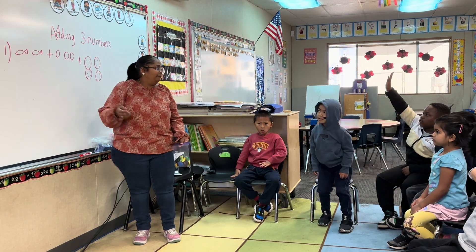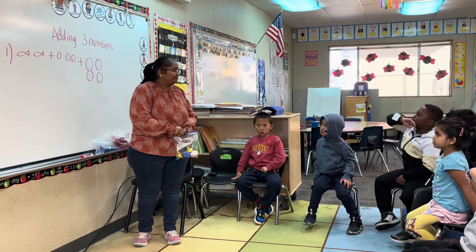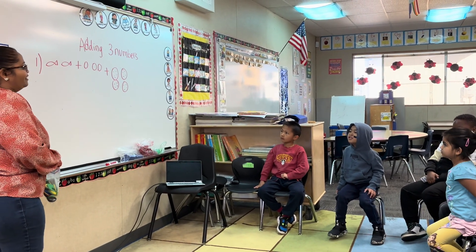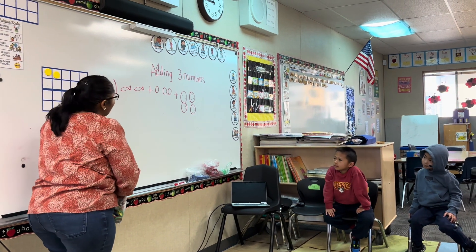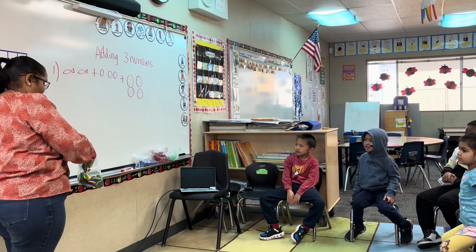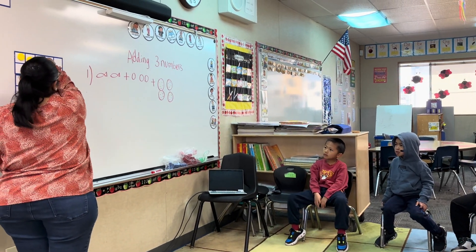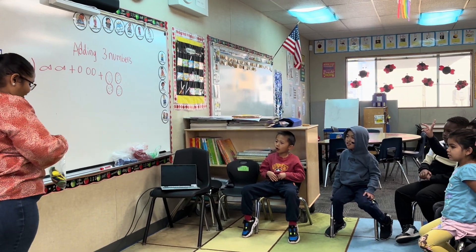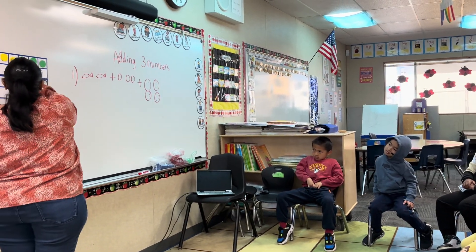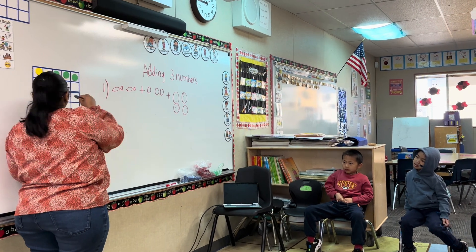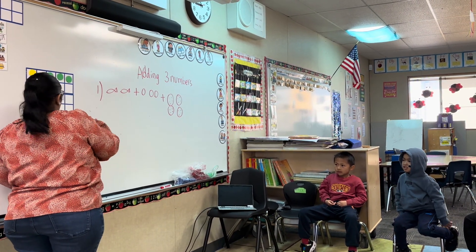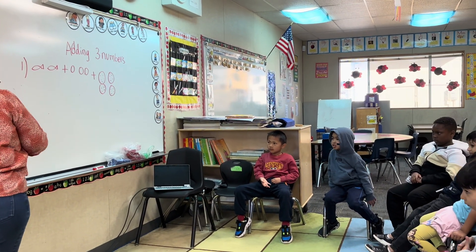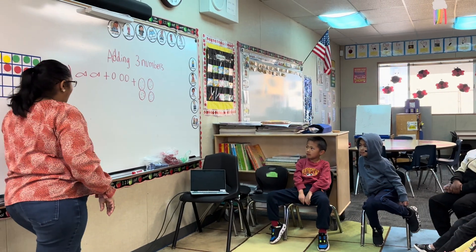Now let's see how we can add them. So how many goldfish crackers do we have? Two goldfish crackers. And how many gummies do we have? Ms. K has three gummies. And how many cookies do we have? We have four cookies. Let me find four red circles. One, two, three, and four.